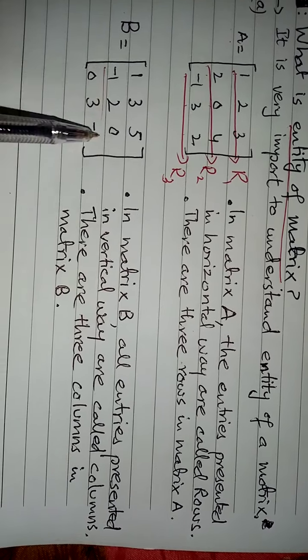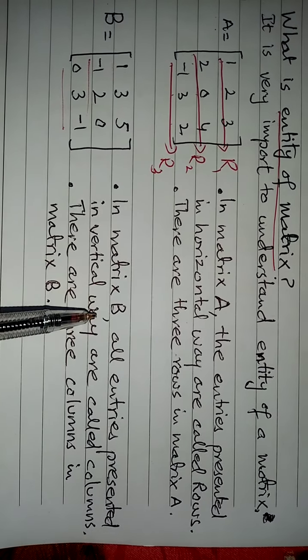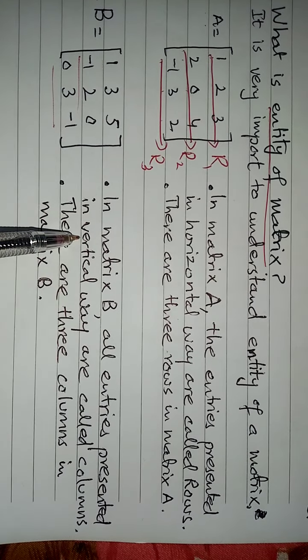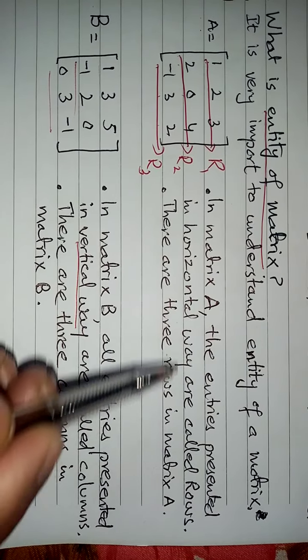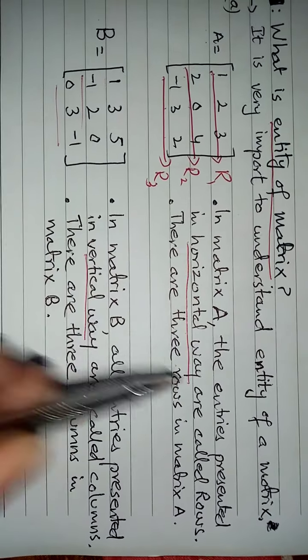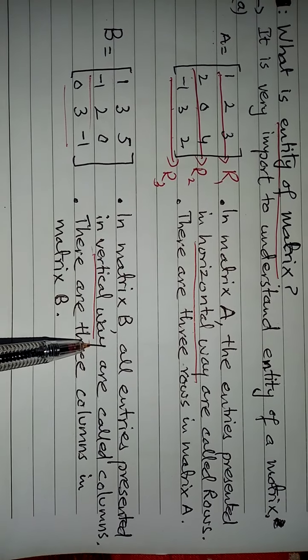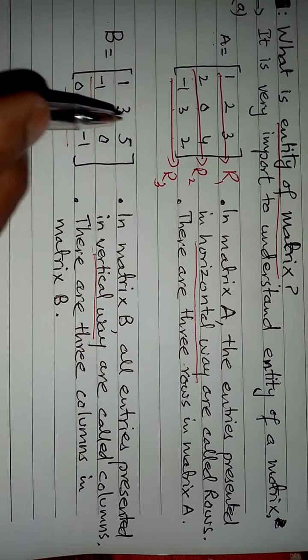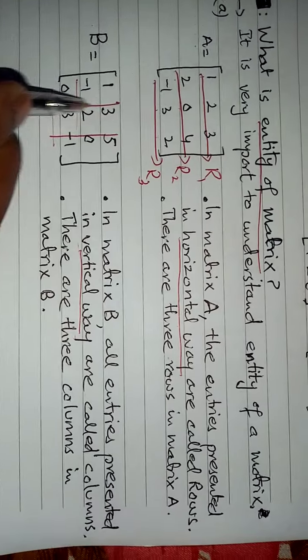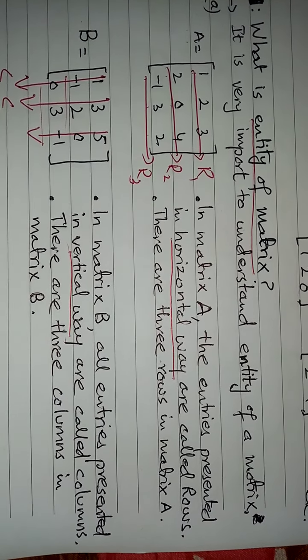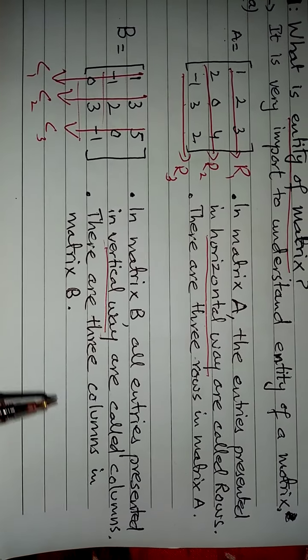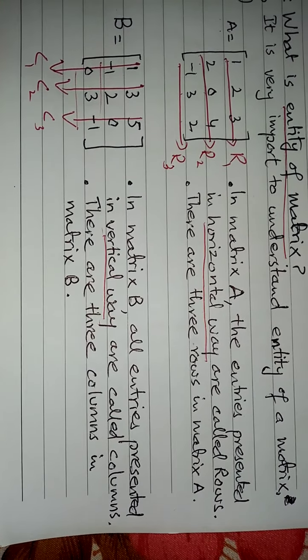Similarly another Matrix given, Matrix B, which also has these entries. And in Matrix B, all entries presented in vertical way. In Matrix A they represented in horizontal way, but here they are given in vertical way. And entries in vertical way are called columns. These entries we call columns: C1, C2, C3. So there are three columns in Matrix B.